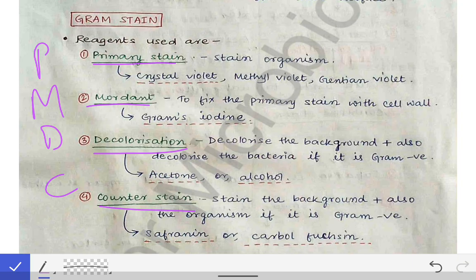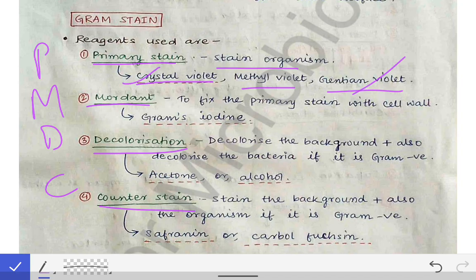The primary stain is for staining the organism, and that staining is done by crystal violet, methyl violet, or gentian violet. In our college at NRSMCH, we used crystal violet or gentian violet in the lab. We used either of these stains to do the primary staining of the organism.